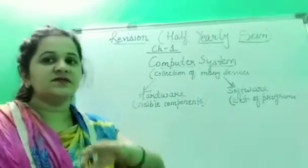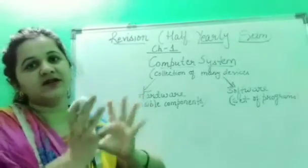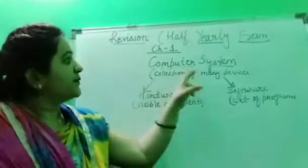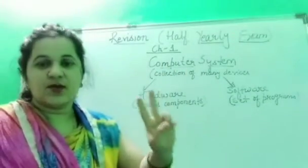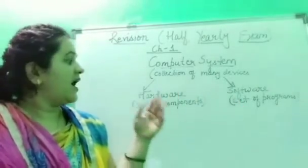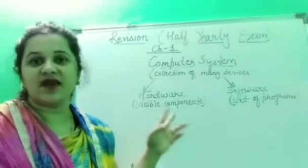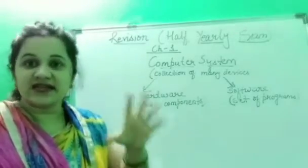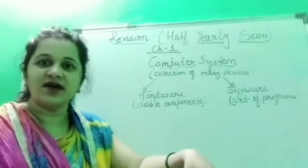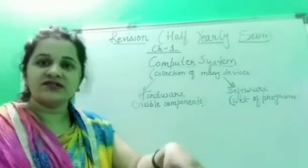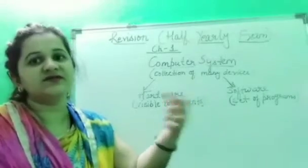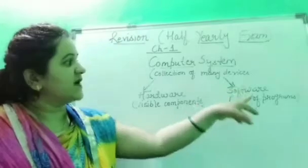A computer system is a collection of many devices combined together in order to perform any function. A computer system is divided into two main parts: hardware and software. Hardware refers to the visible components — the devices which you can see and physically touch, like the CPU, monitor, keyboard, mouse, scanner, and printer.